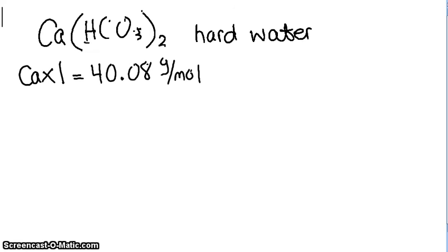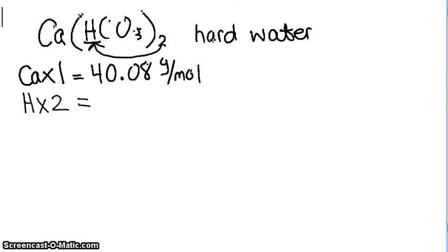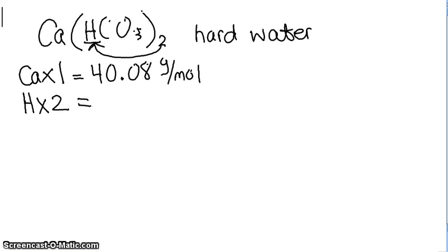Now you move on to your hydrogen atom. In this, you have two HCO3s coming off your calcium, so you have two H's. This 2 applies to this H as well. So you have hydrogen times 2, and you go to your periodic table, find the molar mass of hydrogen, which is 1.008. You go back here, and so 1.008 times 2 is 2.01588 grams per mole.